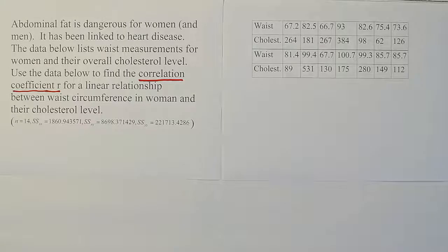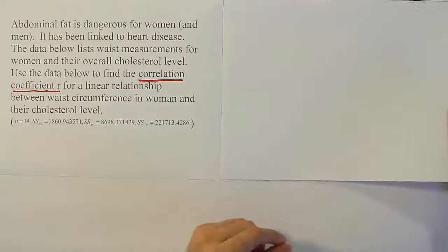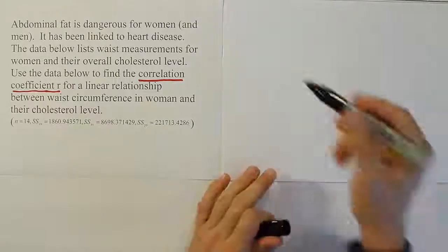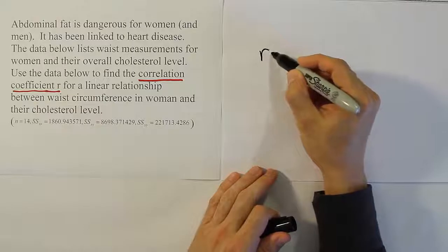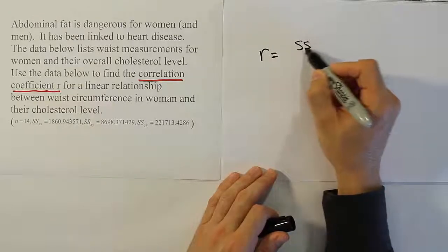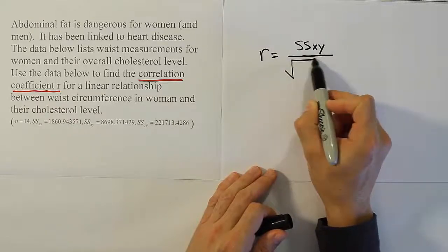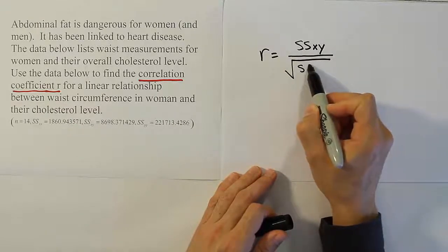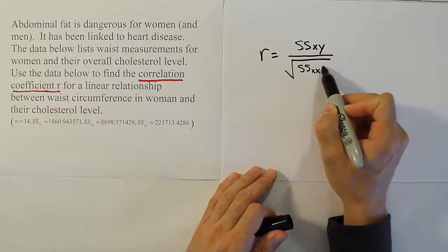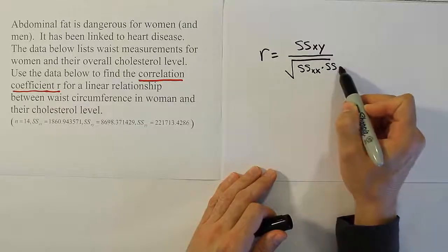All we have to do is plug that information into our formula for R. So let's see what that formula is to start with. First thing we want to do is recognize that the formula is just the mixed term SSXY divided by the square root of the product of the other two terms. So it will be SSXX times SSYY.